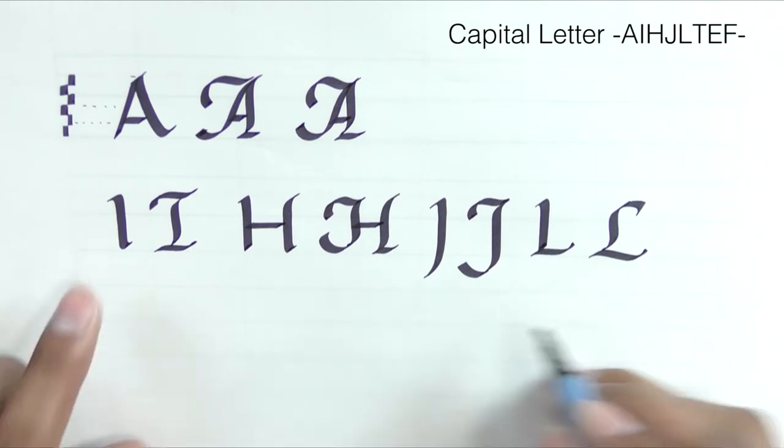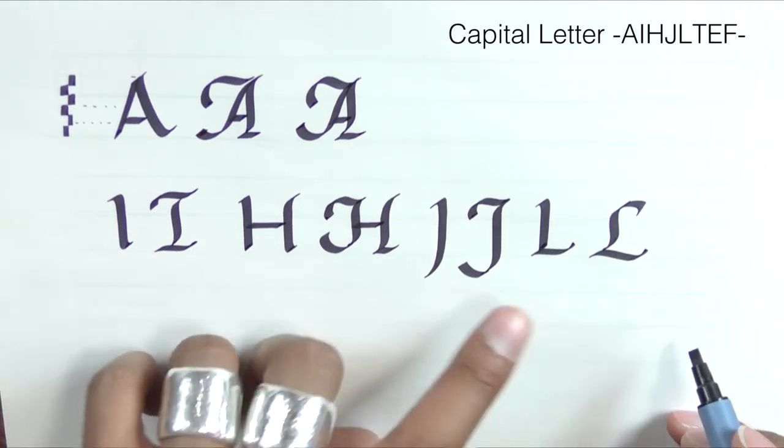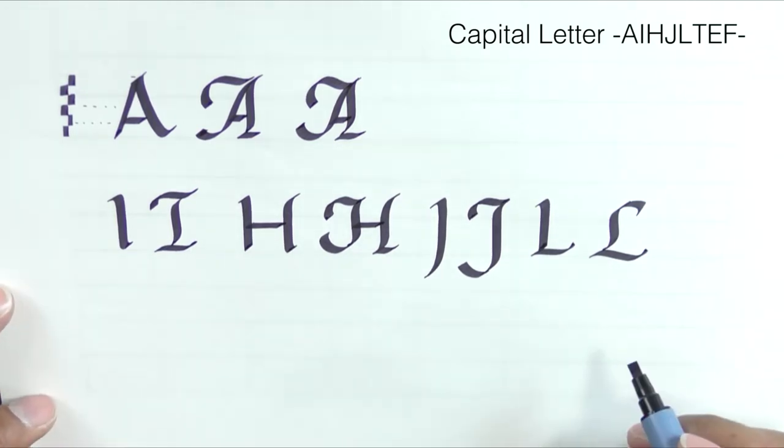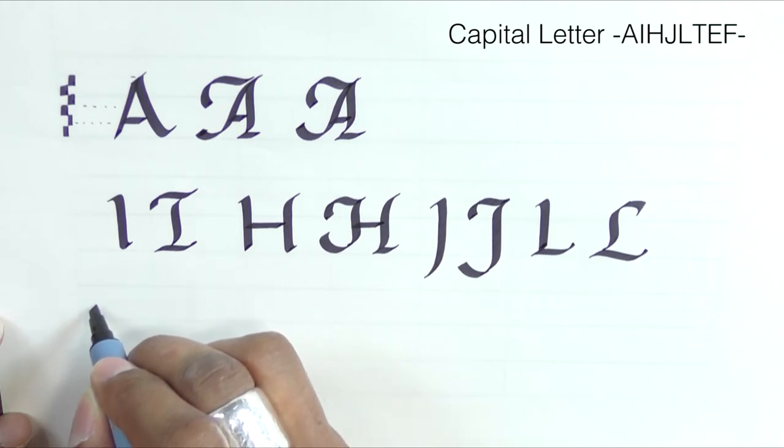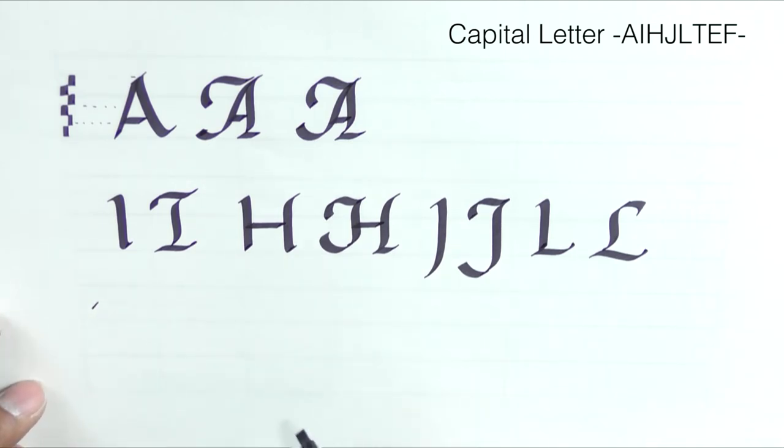The next set of letters are again related to the straight letters. We have the T, the E, and the F. So you have to start the T a little bit lower down. Remember blocking in the same height.